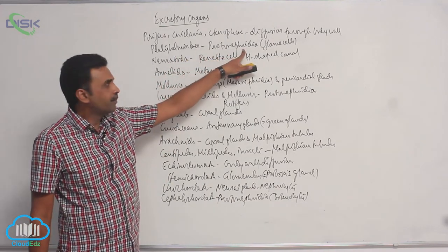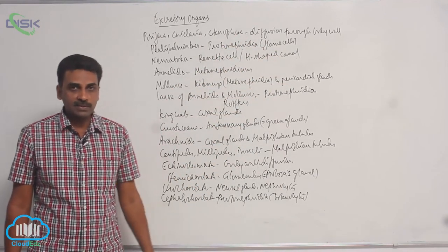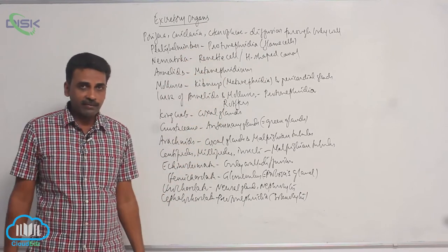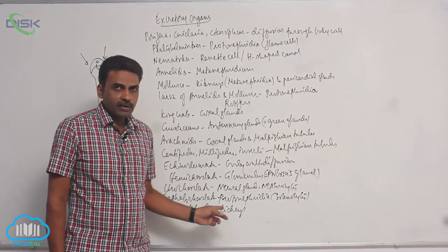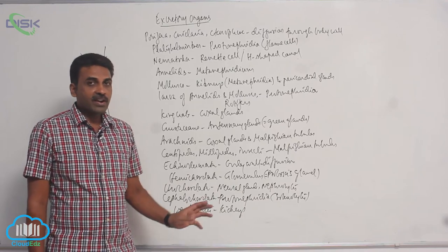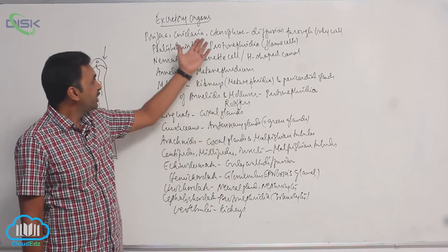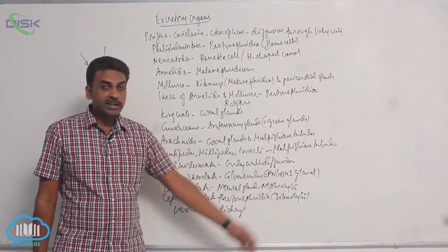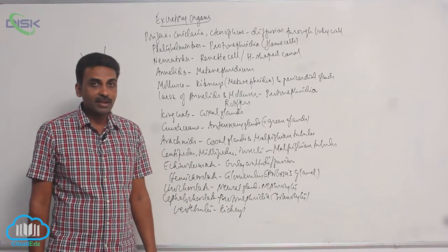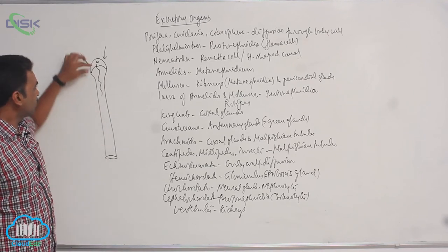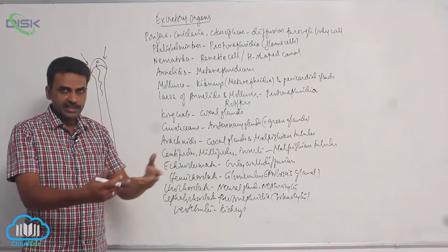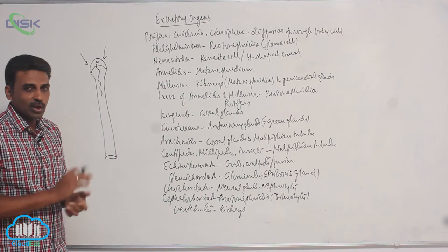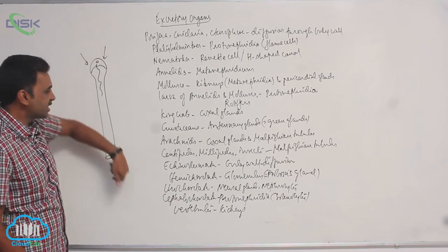In platyhelminthes, the protonephridia are in the form of flame cells, and their main function is osmoregulation — much of the excretion occurs through the body wall. But in cephalochordates, the protonephridia are in the form of solenocytes. Solen means tube-like structure, and site means cell. It is closed on one side — that's why it's called protonephridia — and it is in the form of a tube, that's why it's called solenocyte. So attached to the pharyngeal wall, inside the atrium, you can see protonephridia in the form of solenocytes.